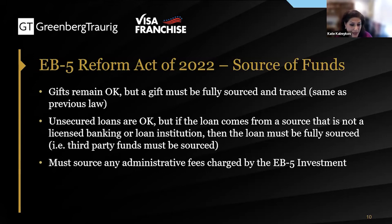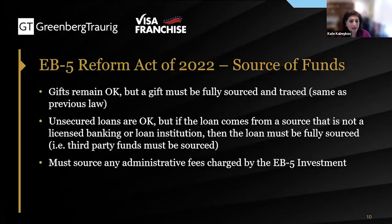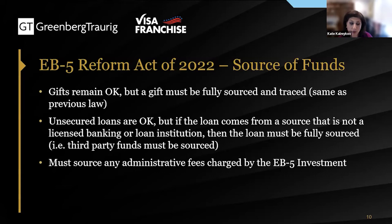Unsecured loans are okay. Previously it was said no loans for a direct EB-5, which basically means you have to be an equity investor into the project. But the equity you're investing — while you can't loan it to the project — you can get your capital contribution in the form of a loan. Typically you have to show how it is collateralized, but the government has now said unsecured loans are okay. If it comes from a source that's not a licensed banking institution, you have to source it — for example, if your mother gives you a loan, you have to explain how she earned the money.